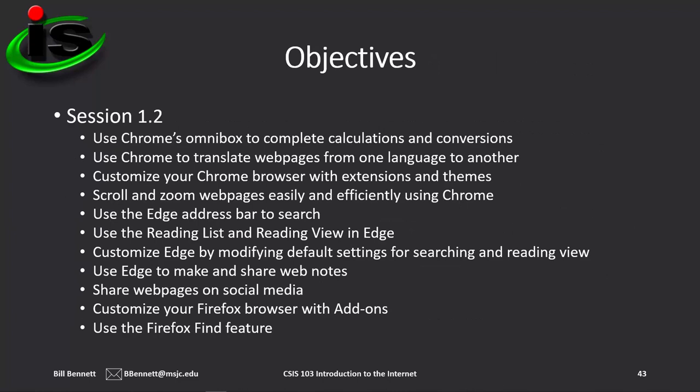We've completed Session 1.1. Moving on now to Session 1.2. The objectives here are to use Chrome's Omnibox to complete calculations and conversions, use Chrome to translate web pages from one language to another, customize your Chrome browser with extensions and themes, scroll and zoom web pages efficiently using Chrome, use the Edge address bar to search, use the reading list and reading view in Edge, customize Edge by modifying default settings, use Edge to make and share web notes, share web pages on social media, and customize your Firefox browser with add-ons and use the Firefox find feature.